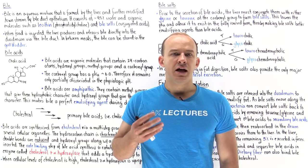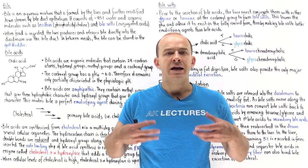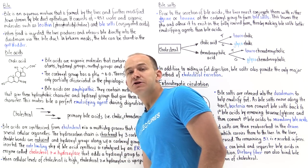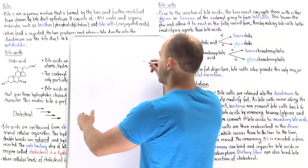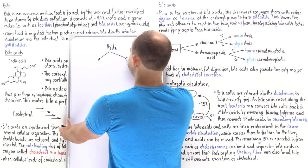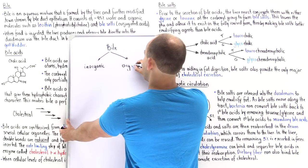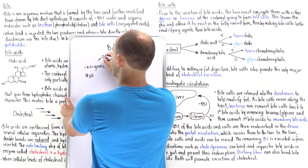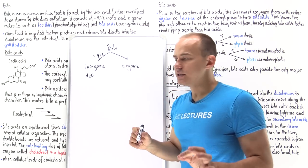One of the major purposes of cholesterol is to help synthesize something called bile. Bile is an aqueous mixture that is produced inside the liver, and it helps emulsify and break down fat that we ingest into our body. Bile contains inorganic compounds and organic compounds. The inorganic compound is water — about 95% of bile is actually water, which is why we call this an aqueous mixture.